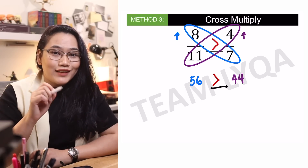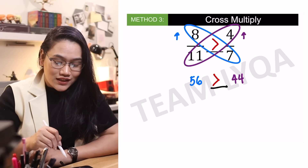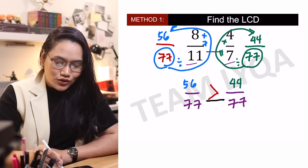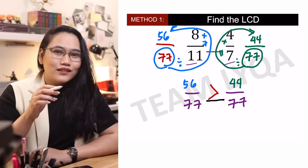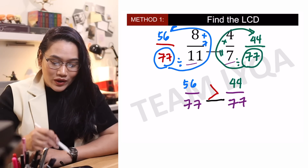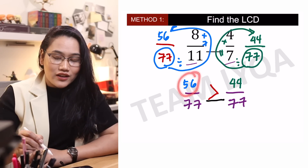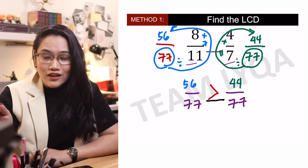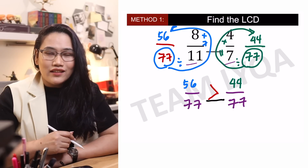Bakit ito nag-work? Let me show you a quick little trick. Itula naman numbers ito — 56 and 44 — pamilyar siya, diba? Kasi kung makikita ninyo, yun din yung numbers dito sa finding the LCD. Ang difference lang is hindi na natin in-involve yung number na nasa ilalim — we went straight to cross multiplication to get 56 and 44. That is why a lot of people prefer method 3 over finding the LCD and over converting them into decimals, kasi nga, it takes a lot of time. Pero, maibibilis pa ba yan?